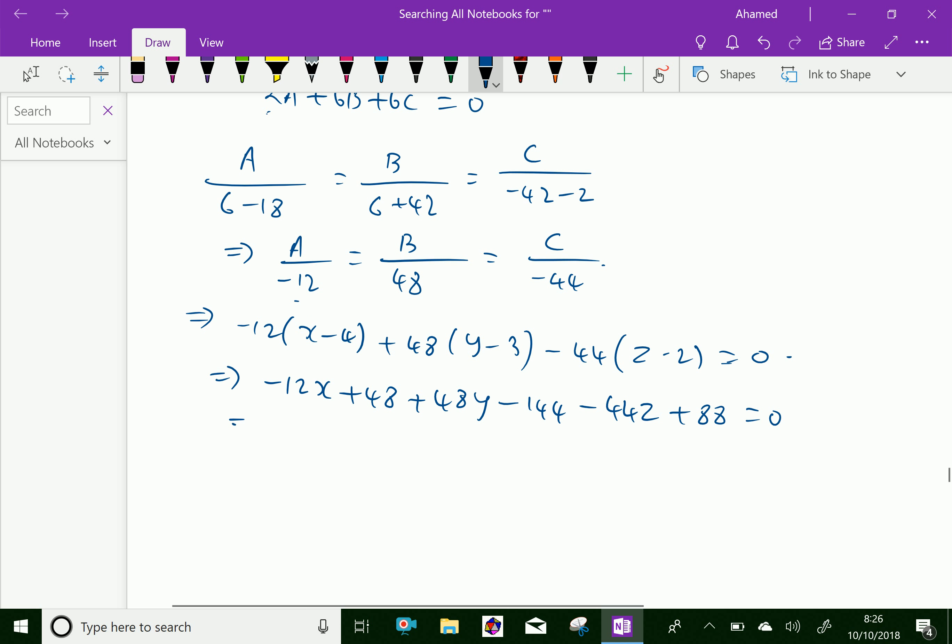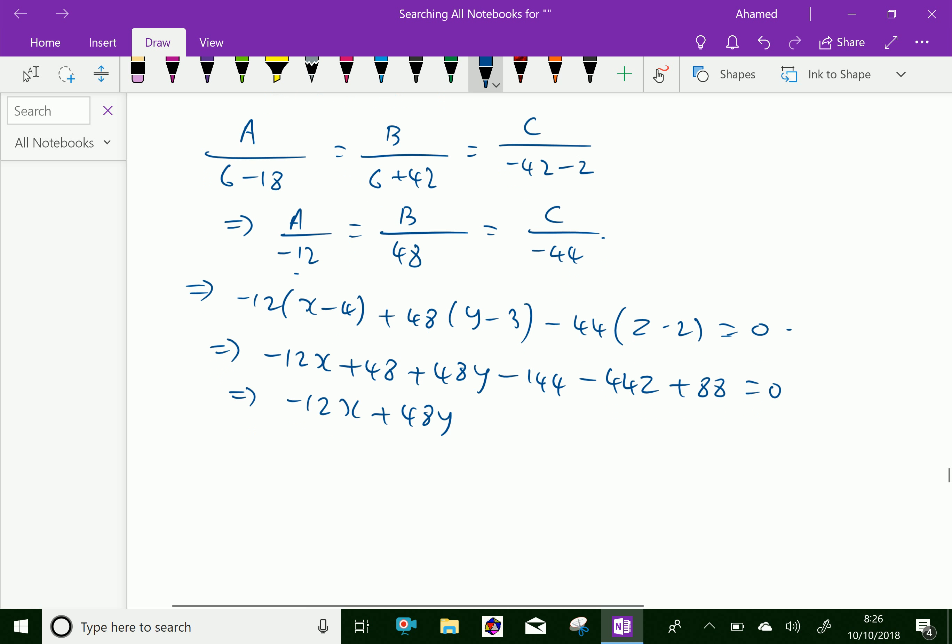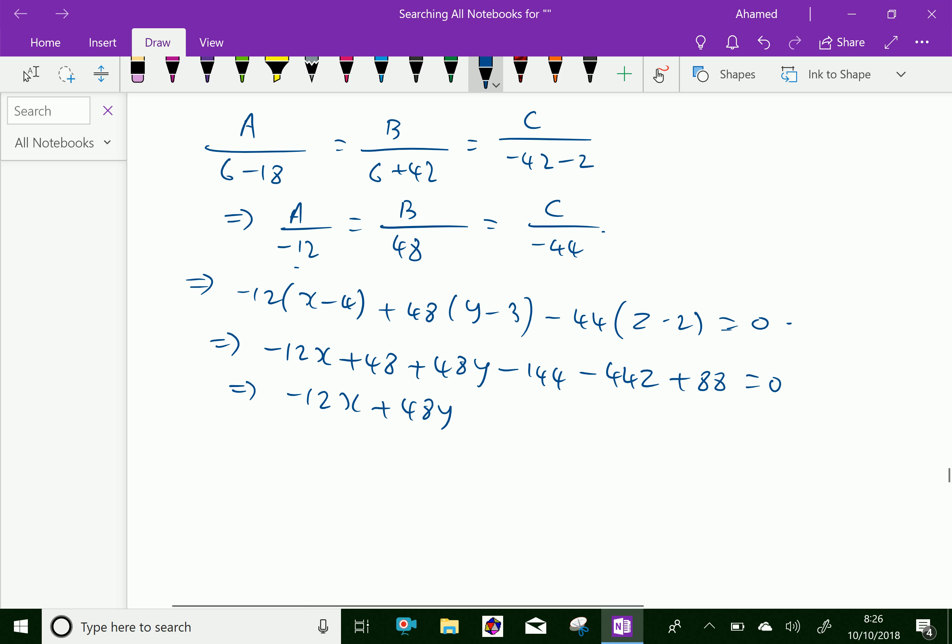Now for the simplification we get -12x + 48y - 44z, and here 48 plus 88 is 136.